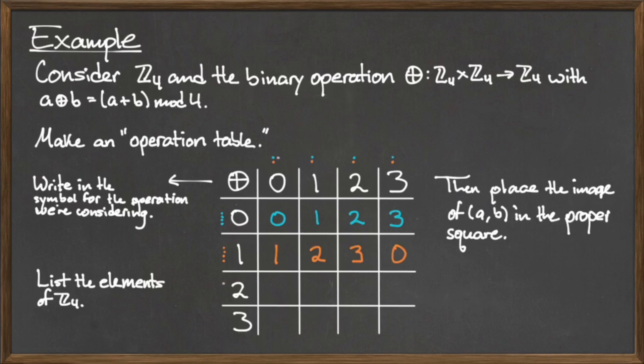If we continue this process for the remaining entries, we can fill in the remainder of this table like so. This table shows how the binary operation ⊕ behaves for every element in Z₄.